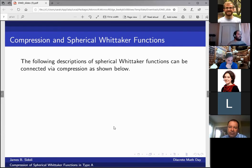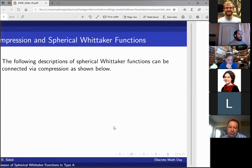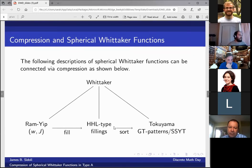We have the following descriptions of spherical Whitaker functions, which can be connected via compression. We have the Ram-Yip formula, which is written in terms of alcove blocks. We have this new HHL type formula, which stands for Haglund, Haiman, and Lohr, and it's over fillings of a Young diagram. And then we have Tokuyama's formula, which was discovered in the 1980s, which is written over Gelfand-Zetlin patterns, which are in bijection with semi-standard Young tableaux. And I'm going to talk about this map, the fill map.